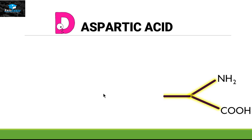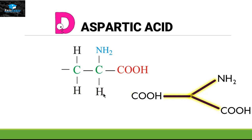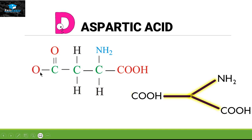For aspartic acid — symbol D — we use the fork structure and attach another COOH group to it. To make the official structure, the beta carbon is attached to the next carbon. This carbon is attached with COOH: two bonds with one oxygen and one bond with the other oxygen. That oxygen makes one bond with hydrogen. This carbon is stable, this oxygen is stable, and this H is stable. This is the official structure for aspartic acid.